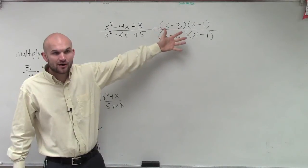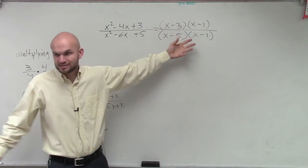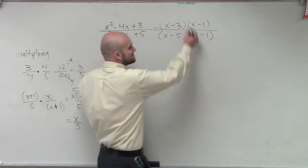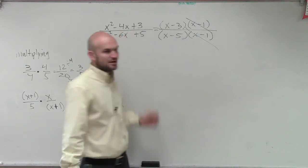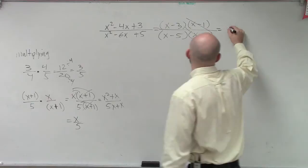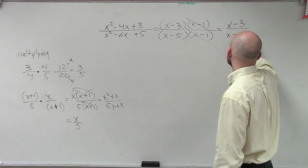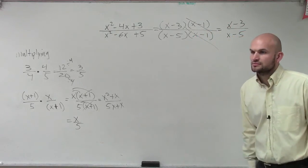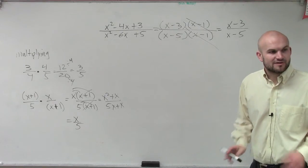But now, once we have this factored out, do you guys see how now I can simplify this? x-1 divided by x-1. One, ladies and gentlemen, is just 1. So therefore, you're going to leave me with (x-3)/(x-5). And there you go. That's going to be your simplified answer.